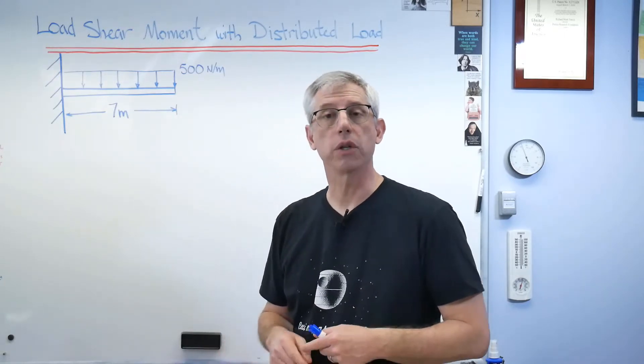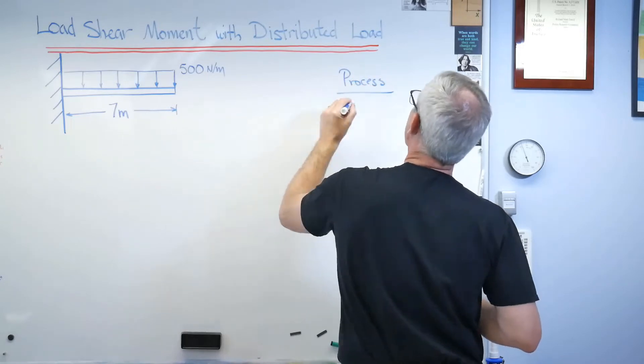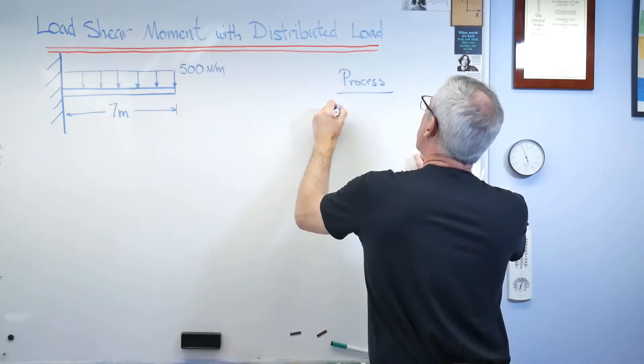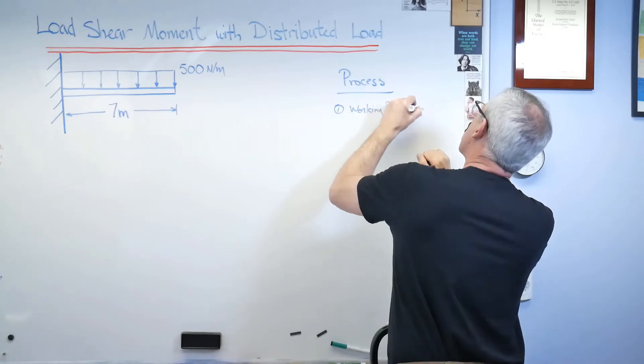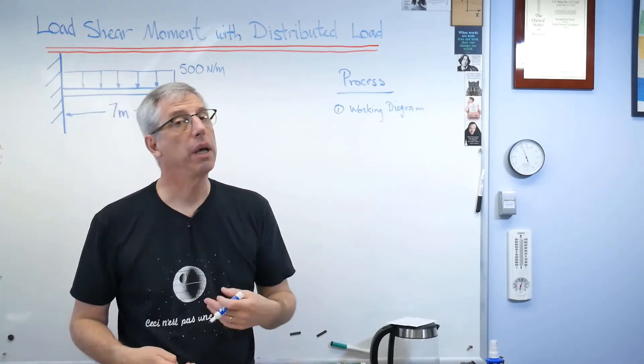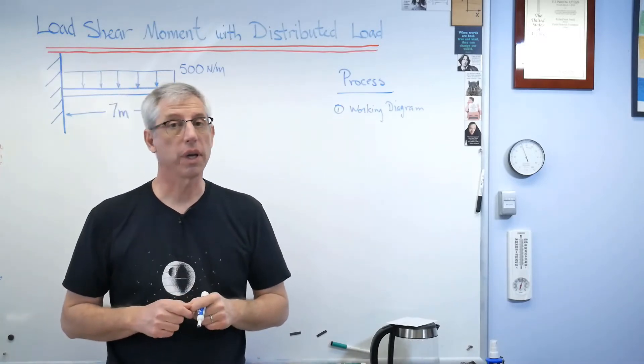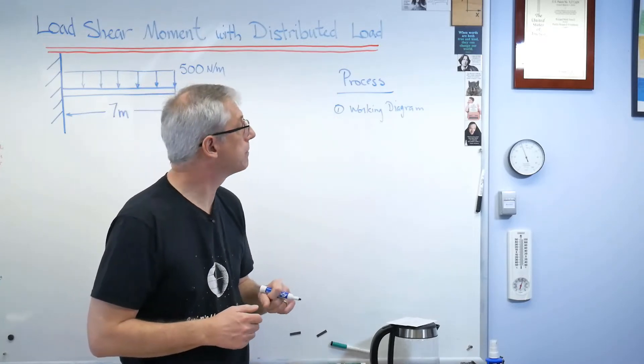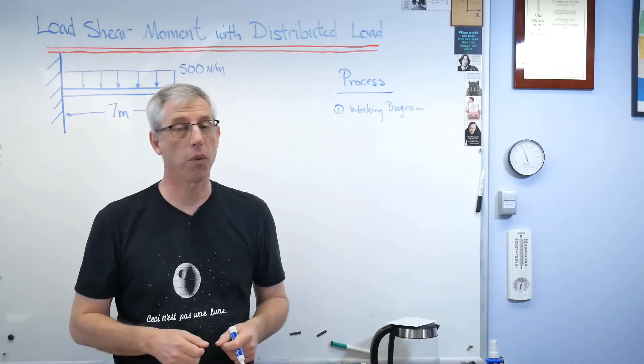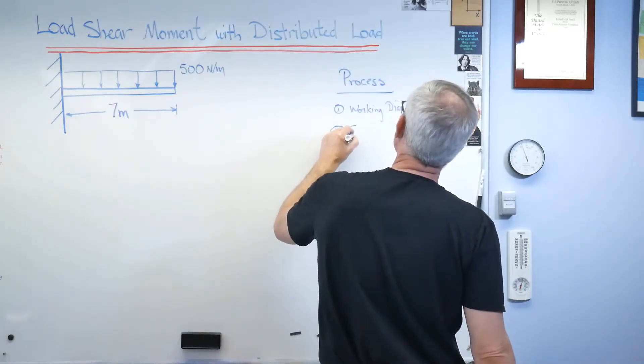There's the working diagram. So the next thing we're going to do is a free body diagram. I'm going to write the process down here. This is the process for constructing a load shear moment diagram. Number one, working diagram. A working diagram is what it sounds like, it's all the information you need to solve the problem and it's usually given in the problem statement. If you're working as an engineer after school, the working diagram, that's all on you. Your boss may go, here, do something with this and walk away. Well, the first thing you're going to need to do is draw a working diagram.